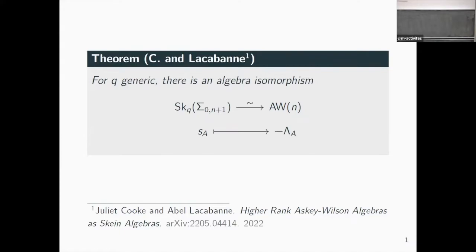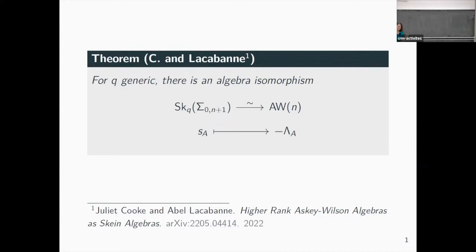Throughout this talk, q is going to be generic — not a root of unity. No secret number theory, no p-adics, no strange non-characteristic-zero fields. Everything is going to be over ℂ, and q is not a root of unity.